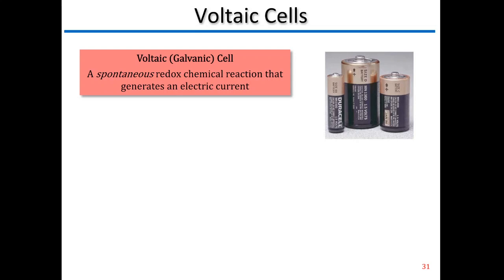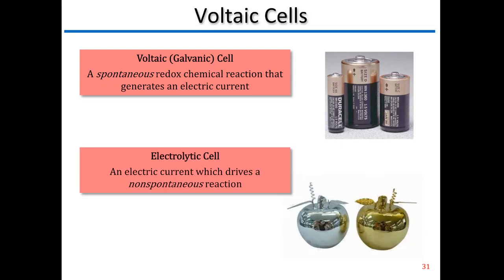A voltaic cell, also called a galvanic cell, is like what you find in batteries. A voltaic cell is a spontaneous redox chemical reaction that generates an electrical current. We also have what's called an electrolytic cell, where you need an electric current to drive a non-spontaneous reaction. The big difference is that a voltaic cell has a spontaneous reaction, whereas an electrolytic cell has a non-spontaneous reaction.